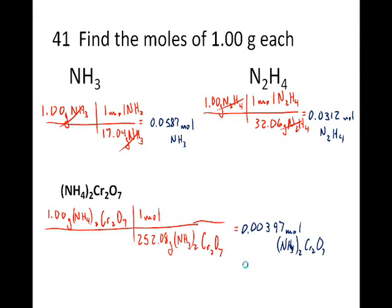Number 41 is taking those same three compounds and finding the moles in one gram of each. That should be for the ammonia 0.587 moles. For this compound that slips my mind what the name is, that should be 0.0312 moles. And for the ammonium dichromate, that should be 0.00397 moles.